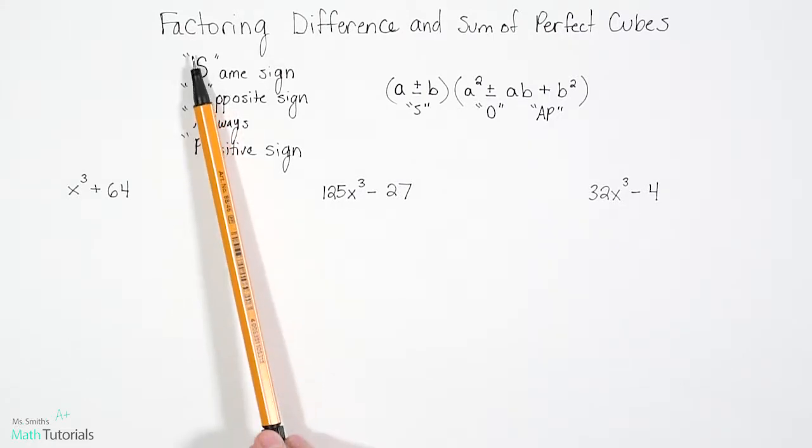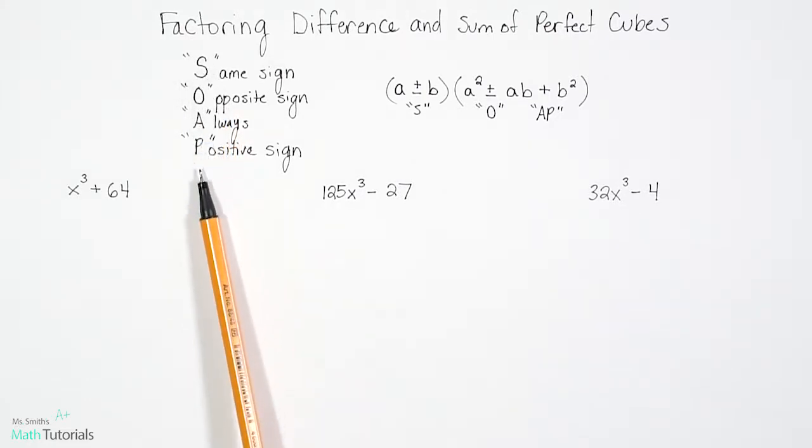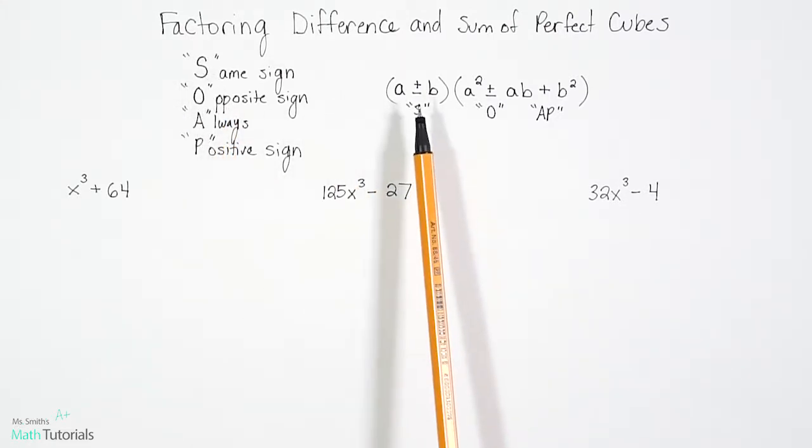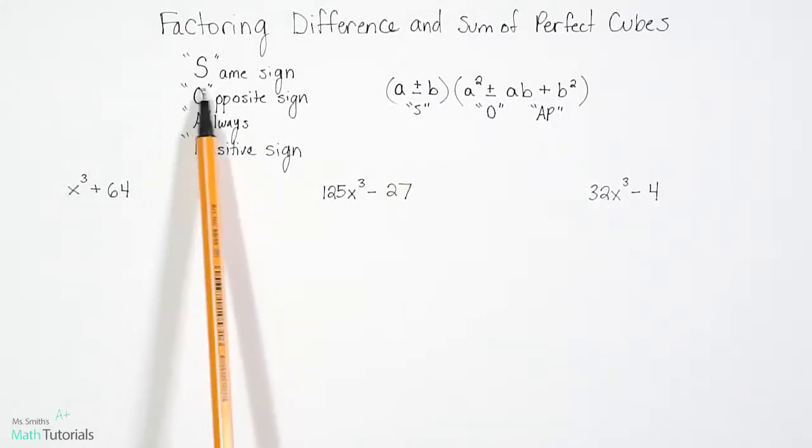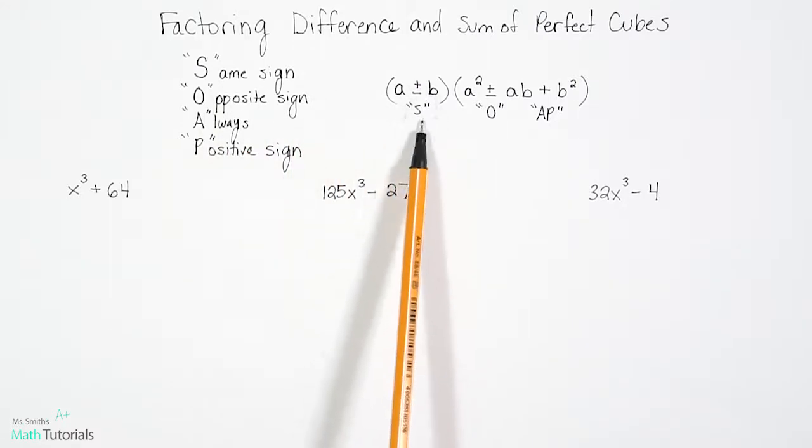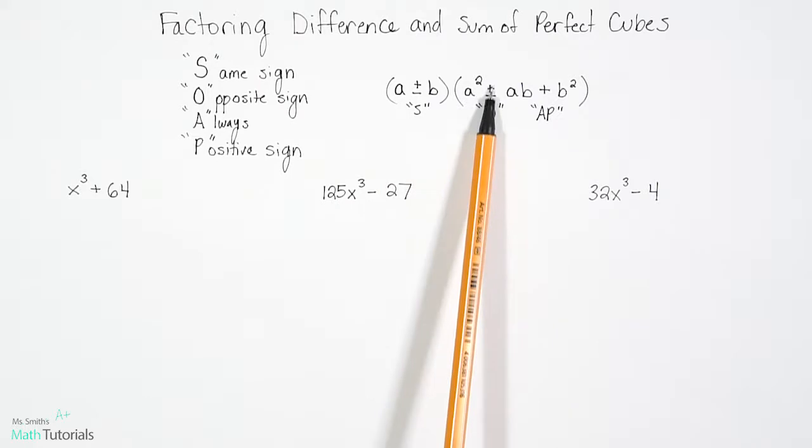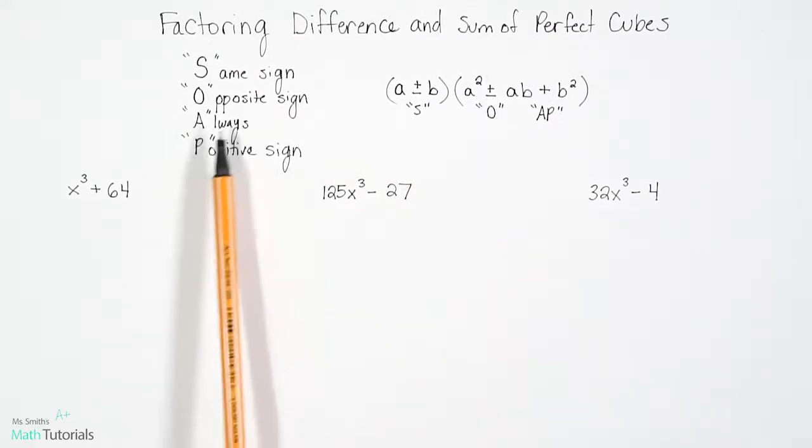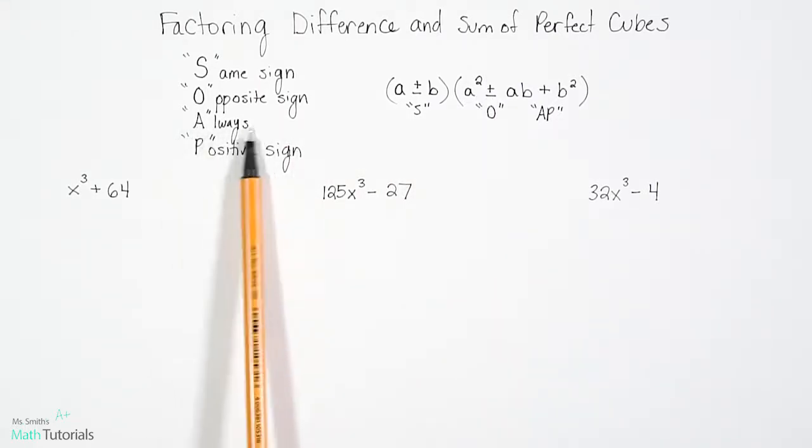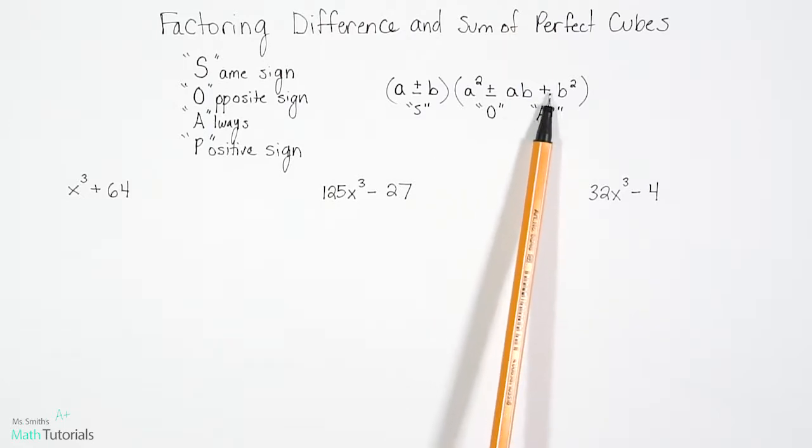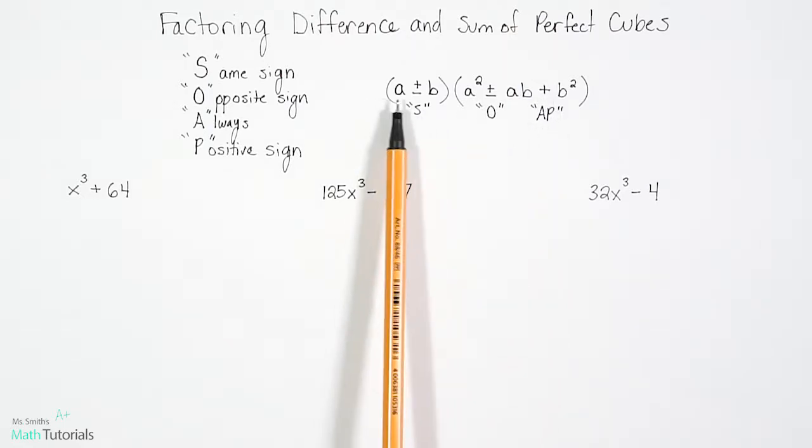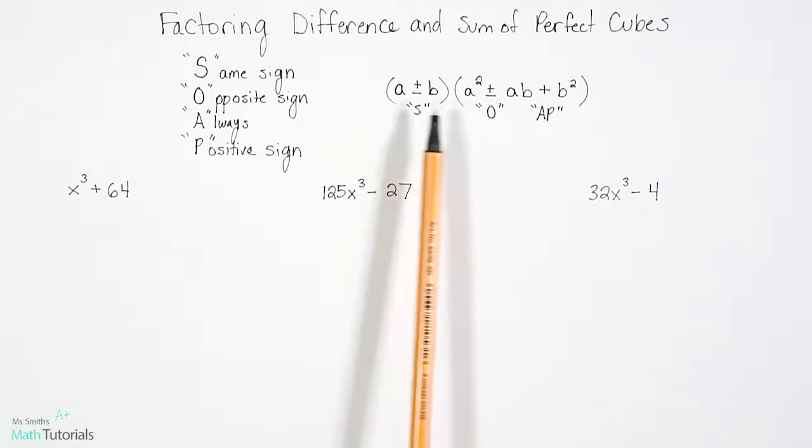So the first thing I want to point out is this acronym here, SOAP. SOAP is just an easy way to help us remember how to do the signs as we go along. S stands for same sign, whether it's negative or positive. O stands for opposite sign. AP kind of goes together, it's always positive sign. So this last one will always be positive, which kind of brings us into this.